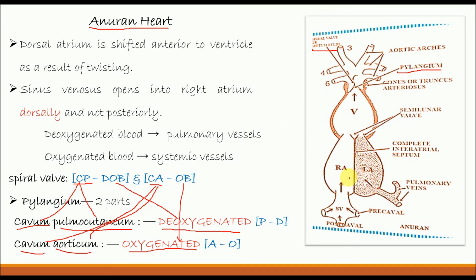An aneuron heart undergoes twisting, due to which the atrium becomes anterior to the ventricle. The sinus venosus opens into the right atrium dorsally and not posteriorly.